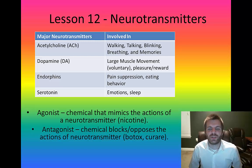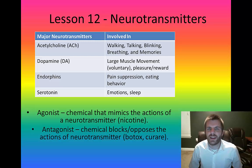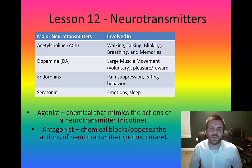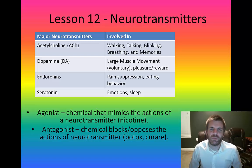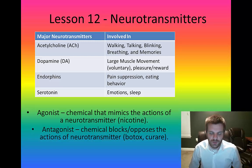Antagonists, on the other hand, block or oppose the actions of neurotransmitters. Two common antagonists that are opposite to acetylcholine are Botox and curare. Curare is a poison that causes temporary paralysis and is often used by remote tribes around the world in hunting, placed on the tips of darts.